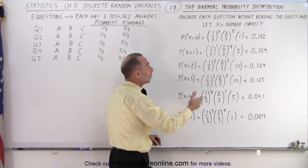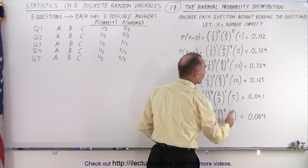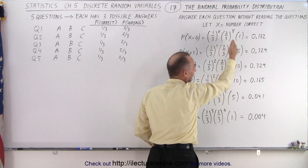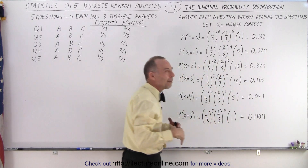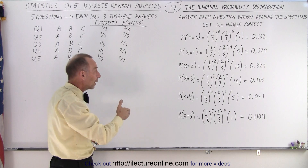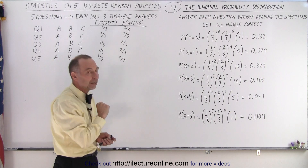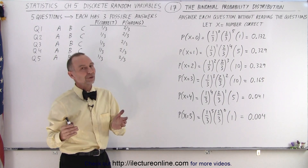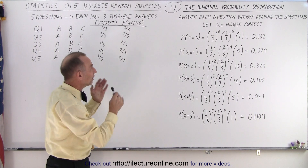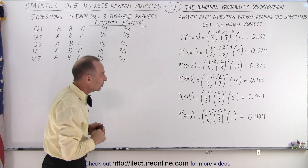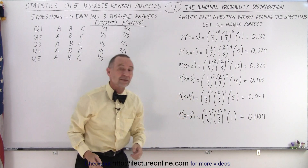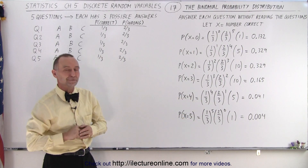The only difference now is how do we calculate these numbers? How many different combinations are there where we get two right, one right, three right, or four right? Well, if you want to know how to do that, stay tuned, and we'll show you the technique of how to use the binomial probability distribution to come up with all these various probabilities. And that is how it's done.